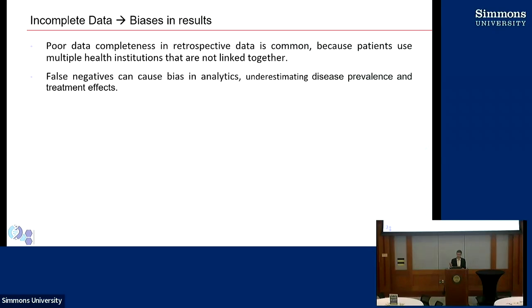Patients go to multiple health care systems for their health care. The perfect thing to do would be to aggregate all the data together across health care systems, or do record linkage across health care systems to get all of the patient's data. But in the practical world, when you're doing research and developing a cohort of patients, you want patients who have gotten most of their care at your institution. If you're missing that, it can cause bias in analytics — it can underestimate disease prevalence and treatment effects.